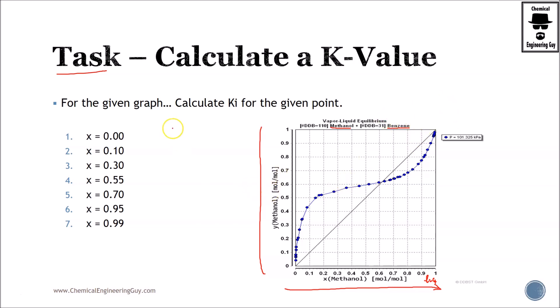The idea is that for K values we only need the compositions of both the liquid phase and the vapor phase, which we can obtain here.